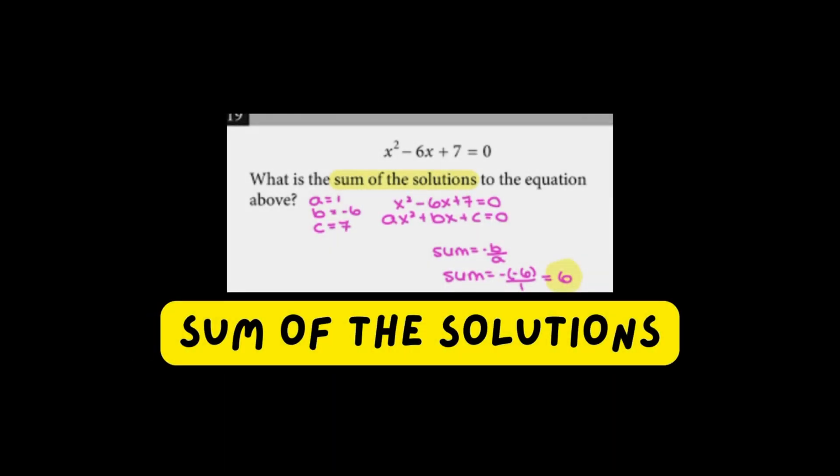Sum of solutions is another problem that can take students a lot of time because they try using the quadratic formula, find each solution, sometimes mess up and have to redo it, spending unnecessary time. What you really have to do to find the sum of the solutions of a quadratic is simply compute negative B over A. That is the sum of the solutions — a potential two-to-four minute problem done in three seconds. That is the beauty of knowing SAT tricks.